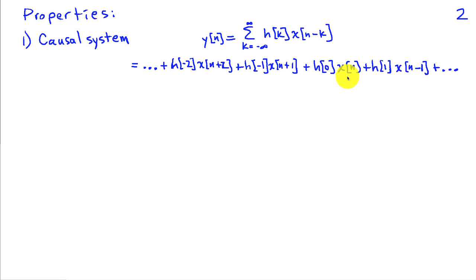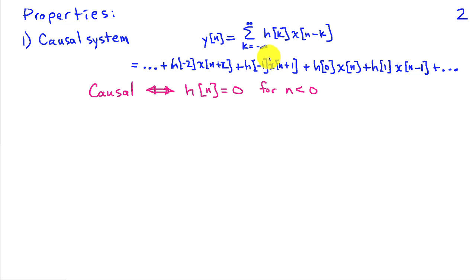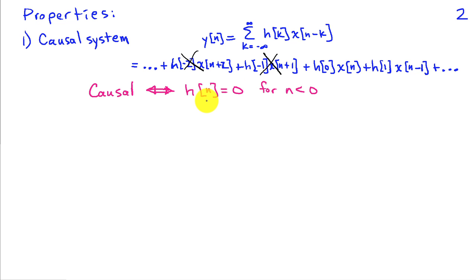Once we get to h of 0 times x of n, now y of n is defined in terms of the present value, and h of 1 times x of n minus 1 involves a past value, and so on. Causality means that none of the future-input terms can be present. So if h of n is equal to 0 for n less than 0, all those terms go away and we have a causal system. This also makes sense because h of n is the response to an impulse at time 0, and the output can only begin once the impulse arrives at time n equals 0.